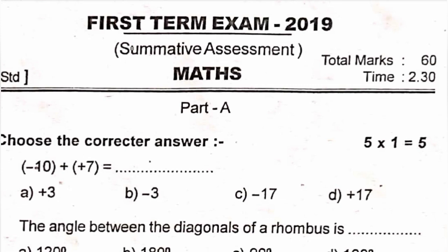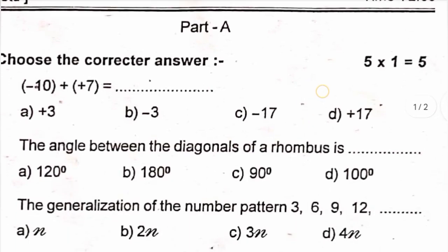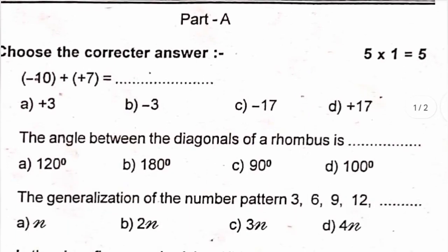Roman numeral 1 — choose the correct answer. Question 1: minus 10 plus positive 7. The answer is minus 10. It's a simple path answer, just practice this question paper.